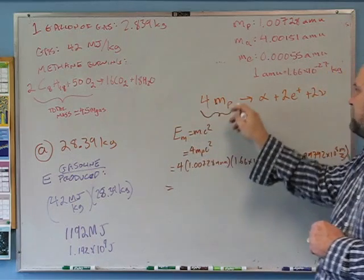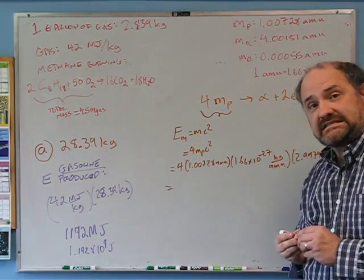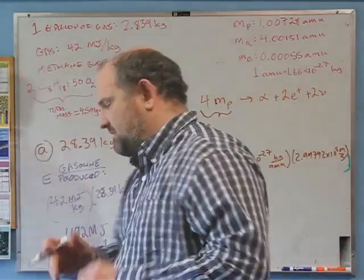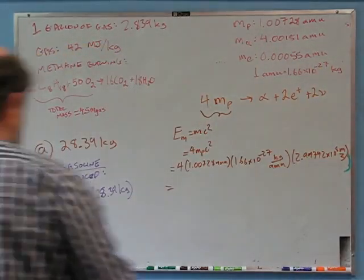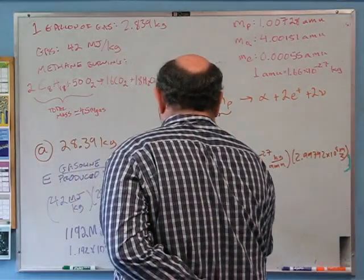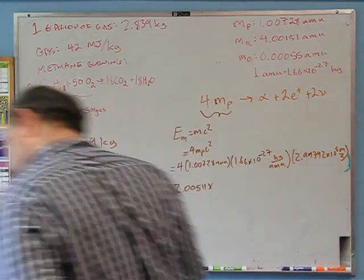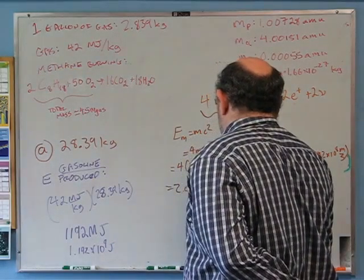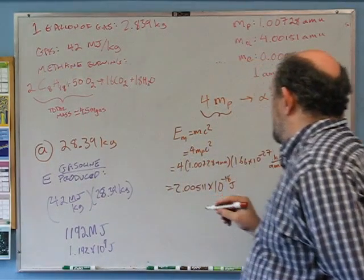When I multiply that up, the energy in the mass on the left side is — from my calculator — 2.00511×10⁻¹⁰ joules (after correctly squaring c). You see why we use MeV — these numbers are tiny. That's the mc² mass energy of the four protons on the left side.